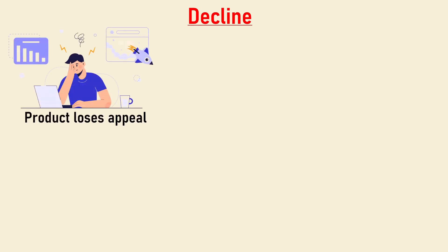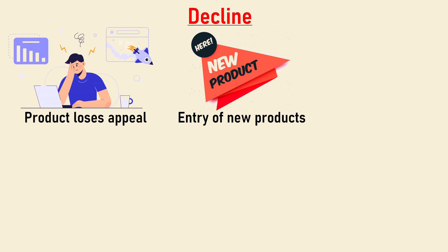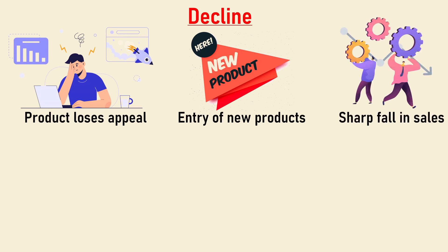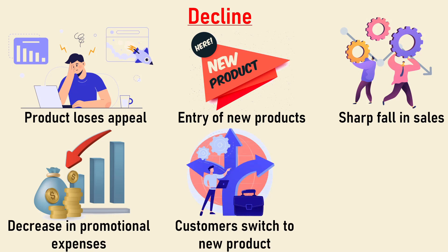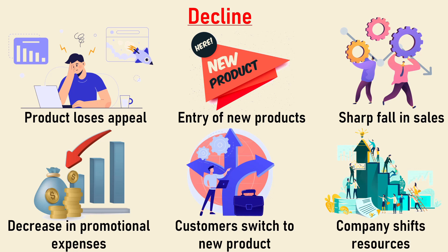Coming to the decline stage. At this stage the product begins to lose its customer appeal and sales drift downward. Gradually the product is displaced due to the entry of new products in the market or a change in the buying behavior of customers. There is a sharp fall in sales and from the company's end there is a reduction in promotional expenditure in an attempt to reduce losses. Profit decreases or there is even a loss, as customers switch to other products. The product gets obsolete and new products begin their own life cycles and replace the old ones. Companies prefer to shift their resources to new products, and there is withdrawal of maximum number of sellers from the market, as a result of which competition declines.